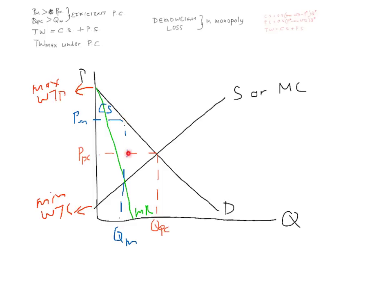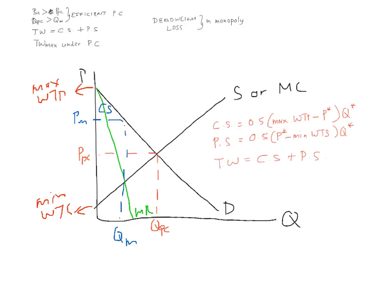This area has been lost by the consumer. One portion of it goes to the producer, because producer surplus is the difference between the selling price — in this case PM — and the minimum willingness to sell. So producer surplus is now this larger gray area. The consumer has lost this area to the producer, and the producer has kept its original area from before.